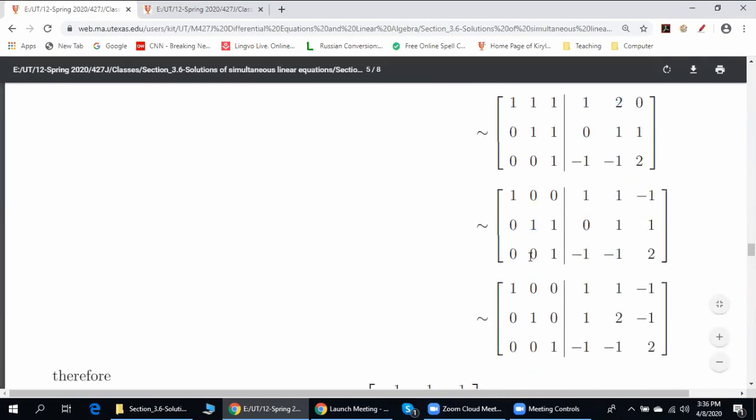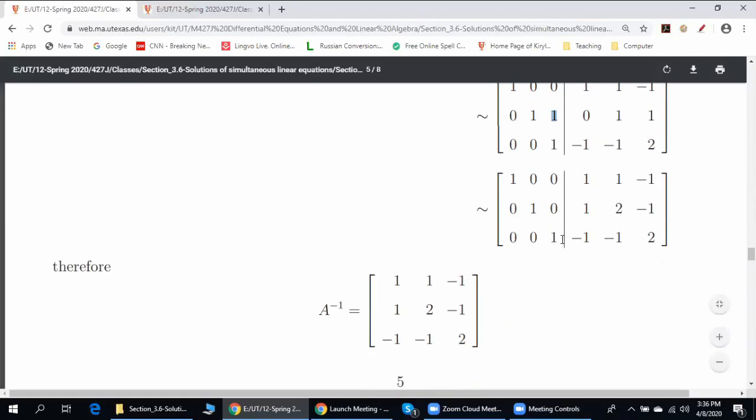Lastly, if we subtract row number three from row number two, we will get zero here. And now on the left, we have identity matrix, therefore on the right, we have A inverse.